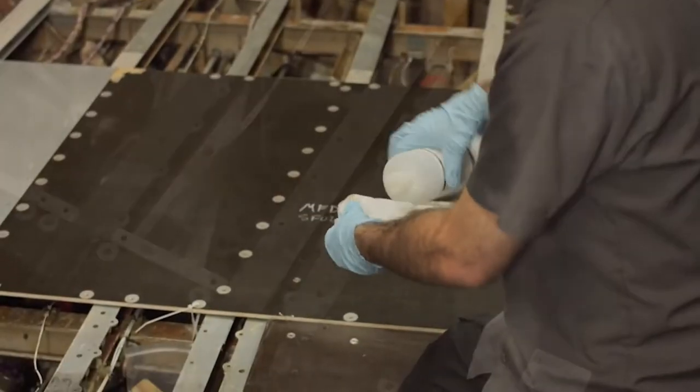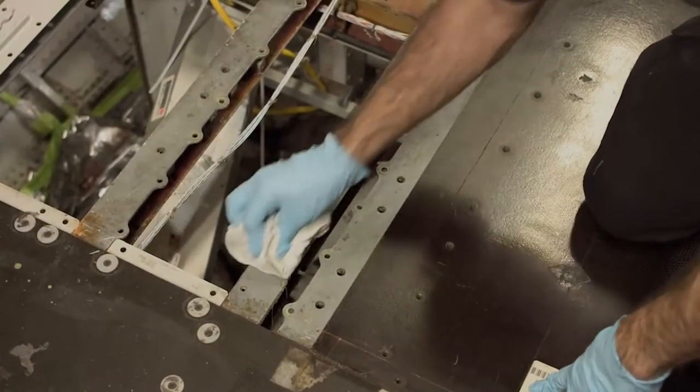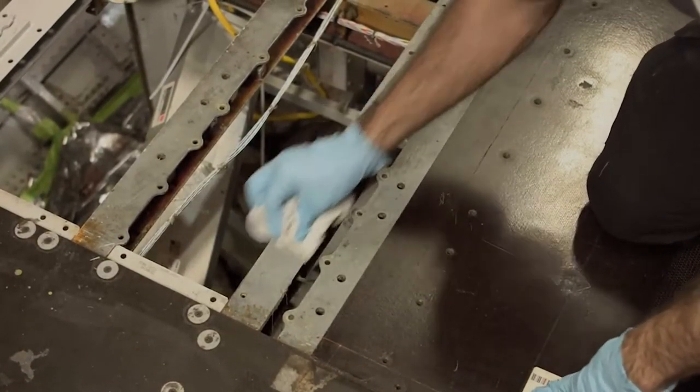Inspect faying surface areas that will contact the ABDEC polyurethane rolled sealant for corrosion and take corrective action based upon current maintenance manual requirements.